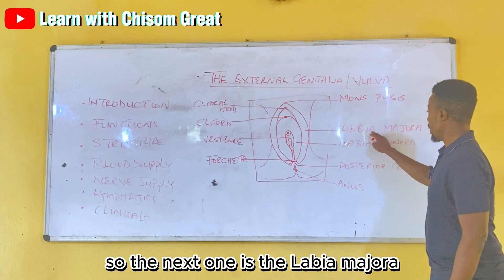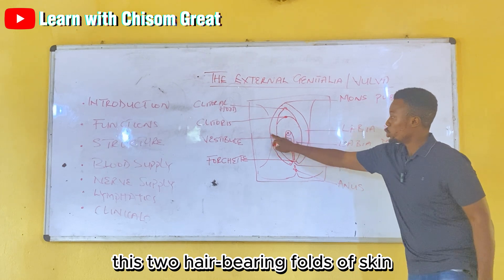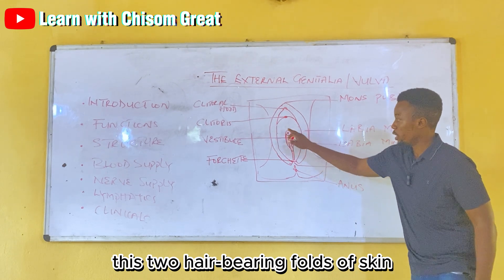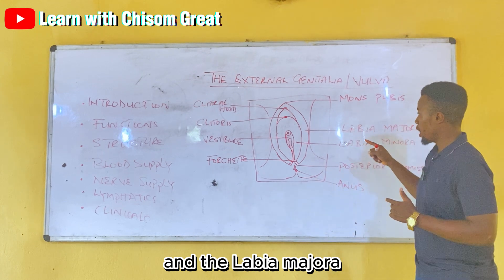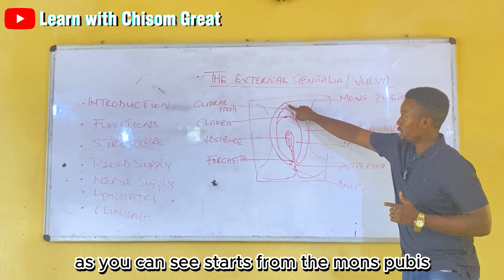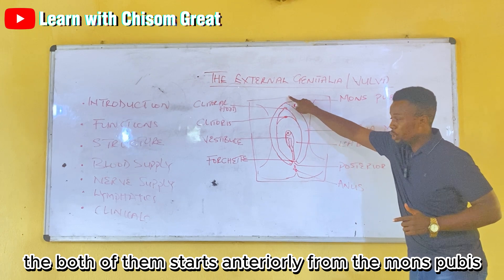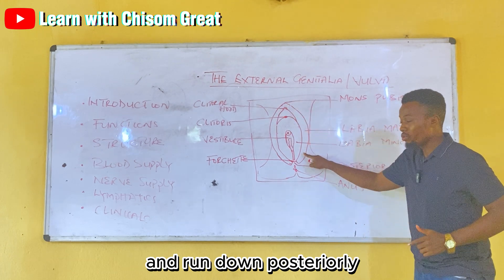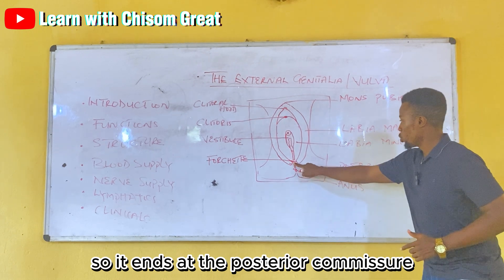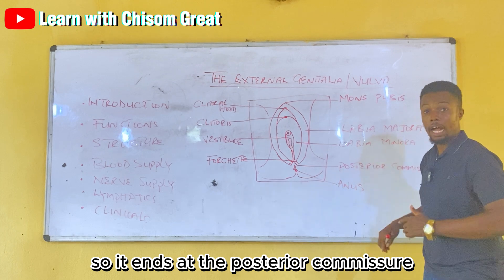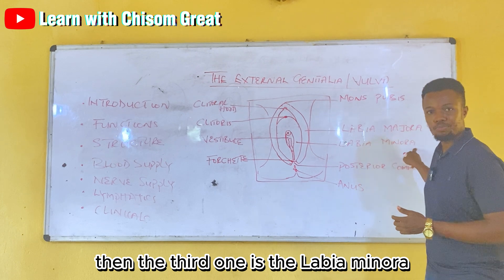The next structure is the labia majora. You can see these two folds of skin — these two hair-bearing folds of skin — called the labia majora. The labia majora starts anteriorly from the mons pubis and runs down posteriorly to end at the posterior commissure. It contains hairs.